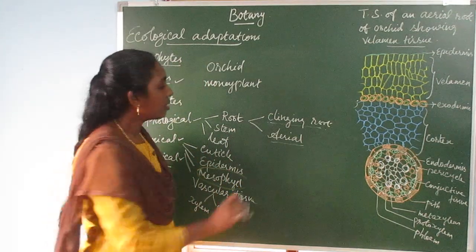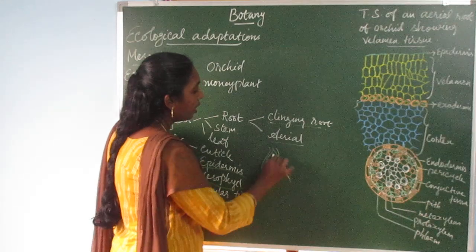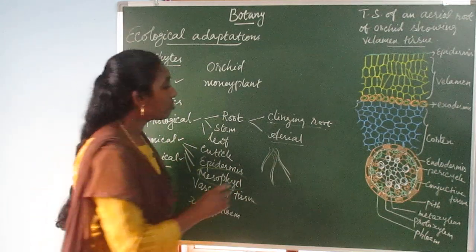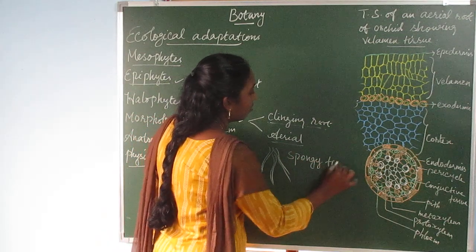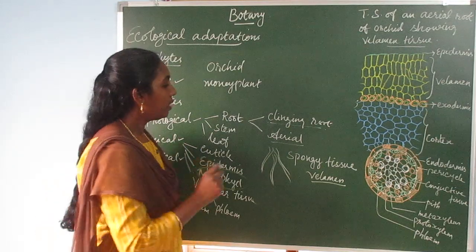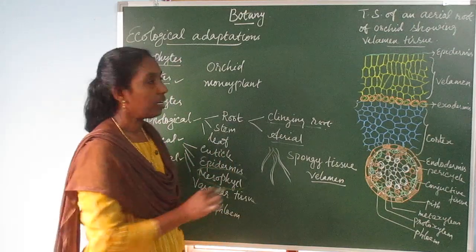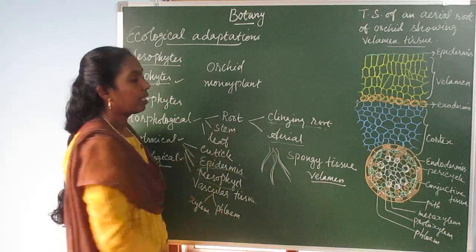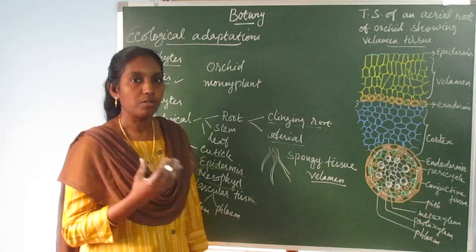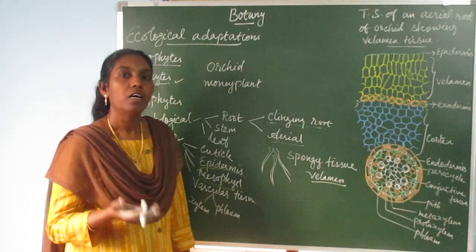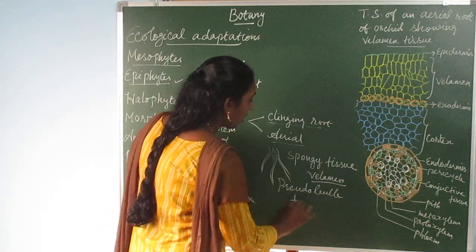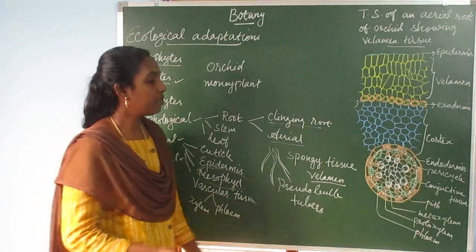Aerial roots are green-colored roots that hang down in the air. These roots have a special type of spongy tissue known as velamen, which is very important for absorbing moisture from the atmosphere. The stem of most epiphytes is succulent in nature and develops a pseudobulb or tuber.